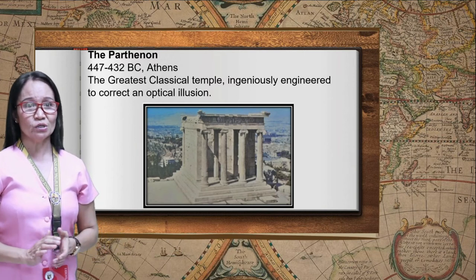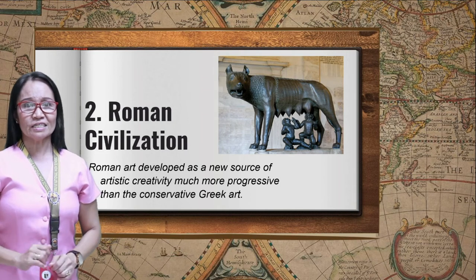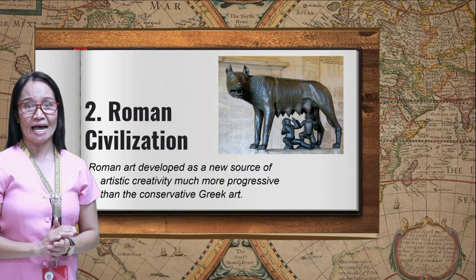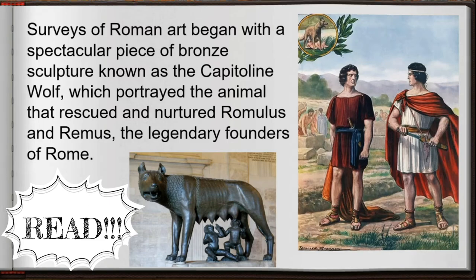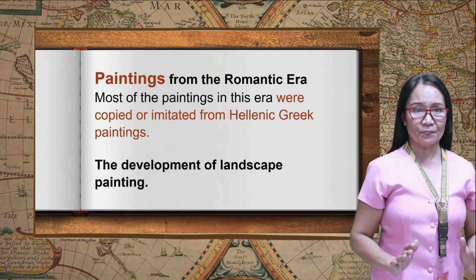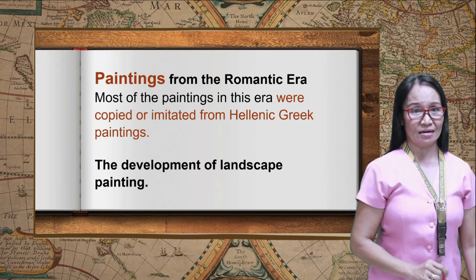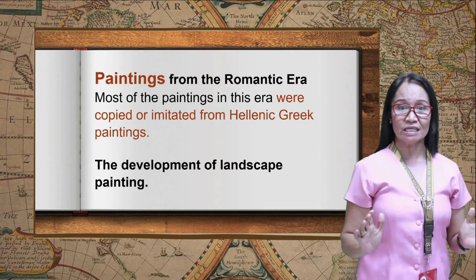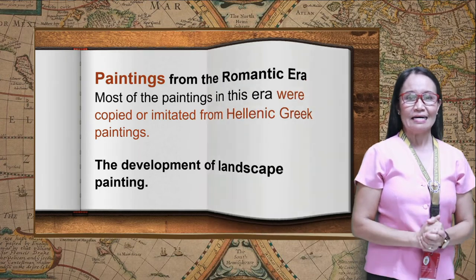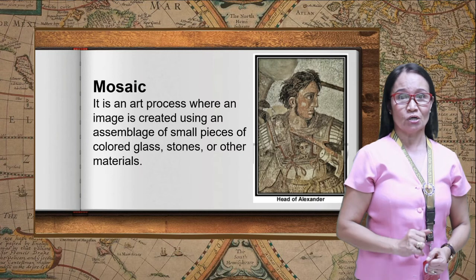Roman art developed as a new source of artistic creativity, more progressive than the conservative Greek art. The diversity of its form and variety inspired a modern attitude in art. Most paintings of this era were copied or imitated from Hellenic Greek paintings, with the fresco technique used on brightly colored backgrounds. The development of landscape painting was the main innovation of Roman painting. Mosaic — an art process where an image is created using assemblages of small pieces of colored glass, stones, or other materials — was also prominent.